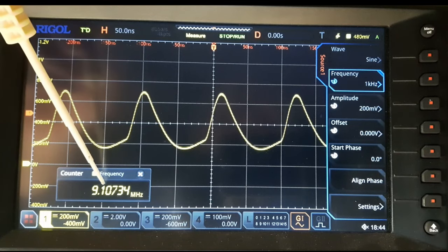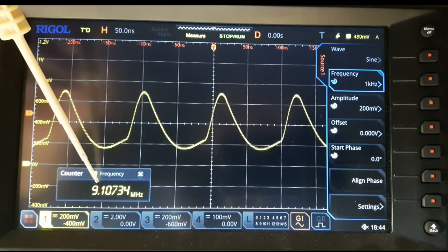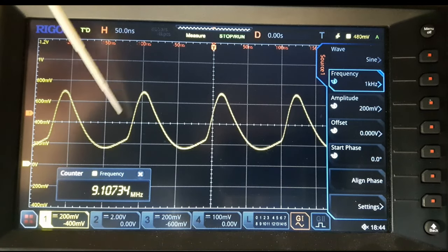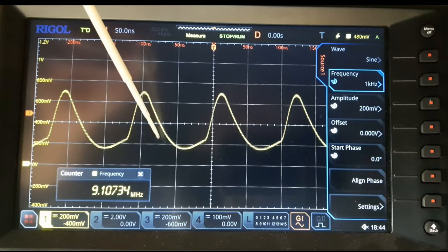And you can see the frequency, the base frequency that the oscillator is working at, 9.1 MHz here. So if we had a really pure sine wave we wouldn't have any harmonics.